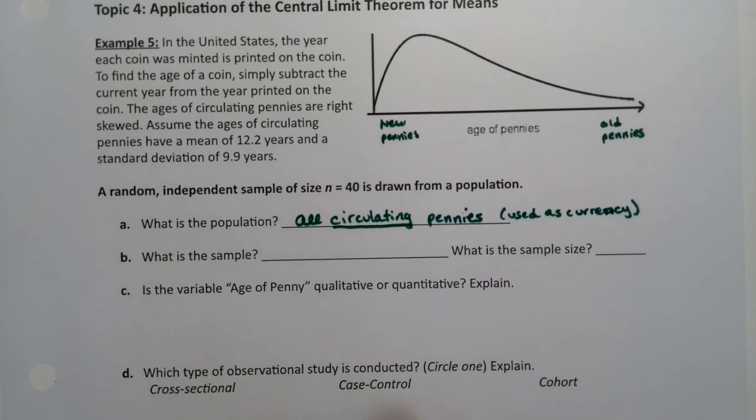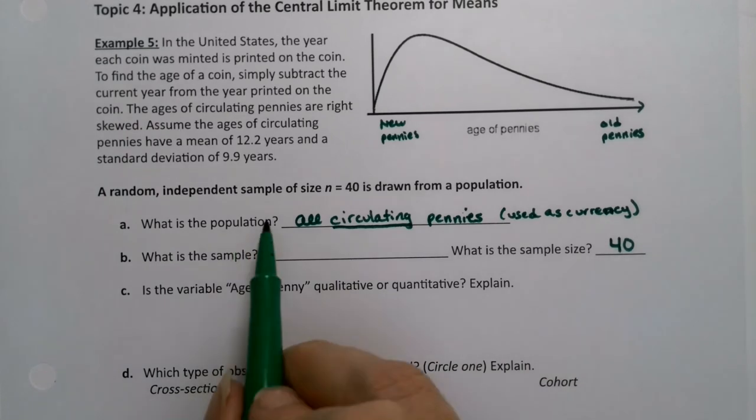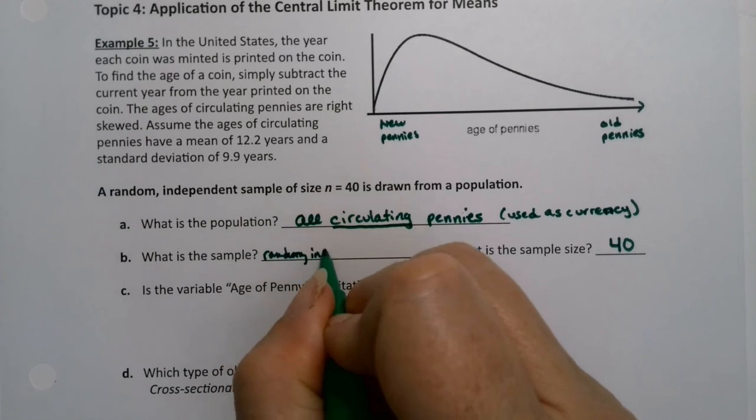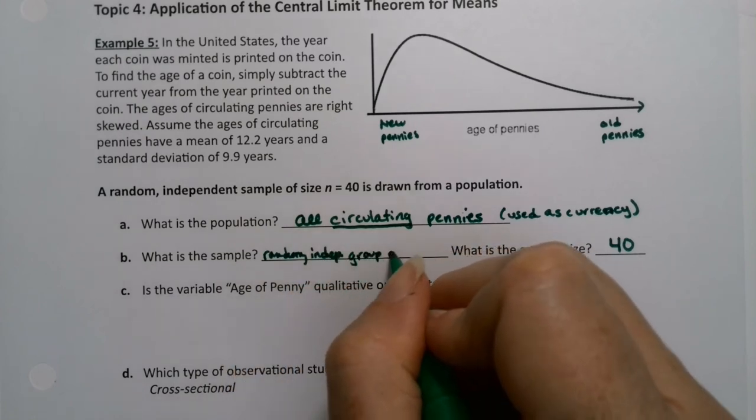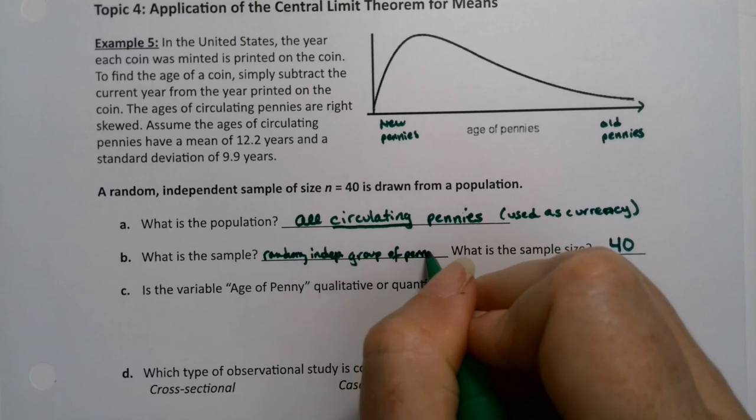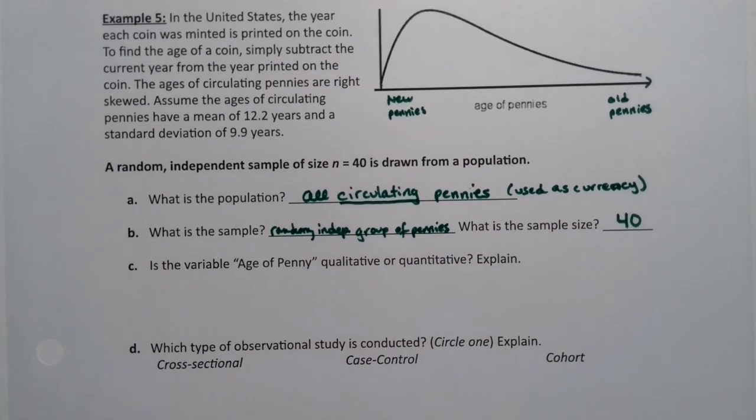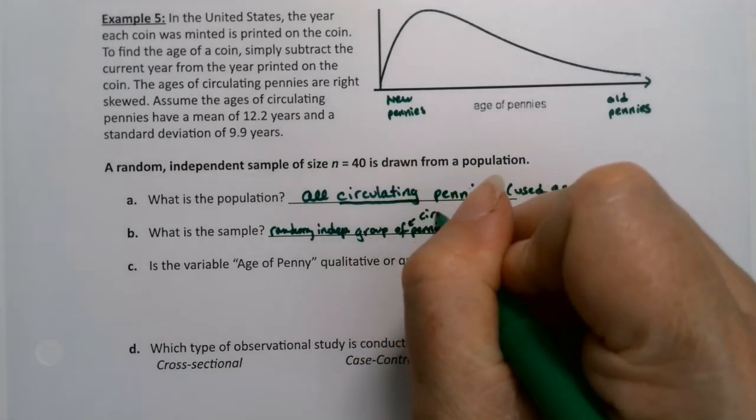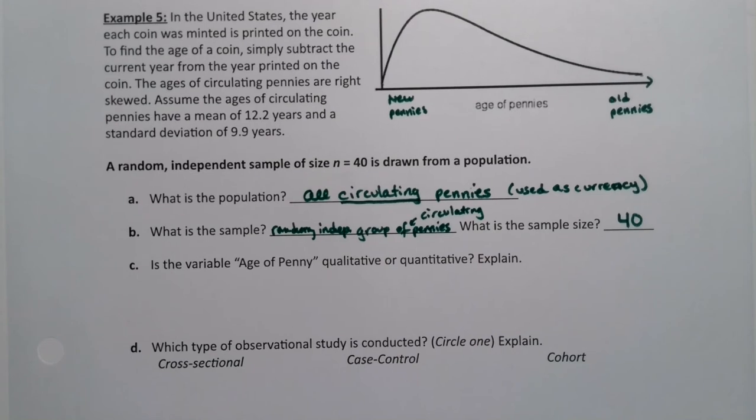What is the sample? Well, it was 40 circulating pennies, right? So the sample size is 40 and it says it's a random independent. So it'd be random independent group of pennies. I didn't have the right room to write the word circulating, but they would be circulating also.